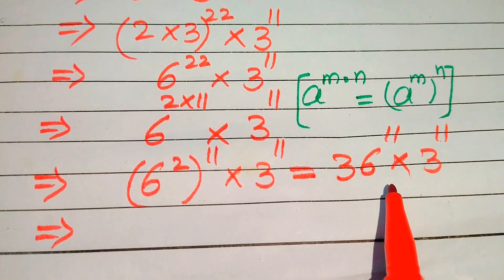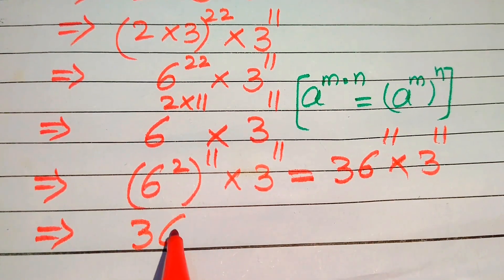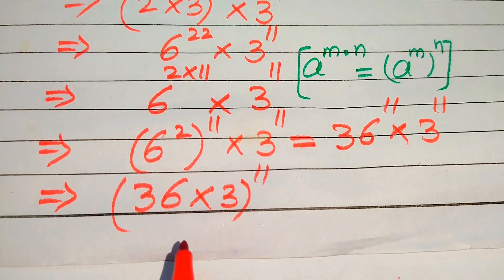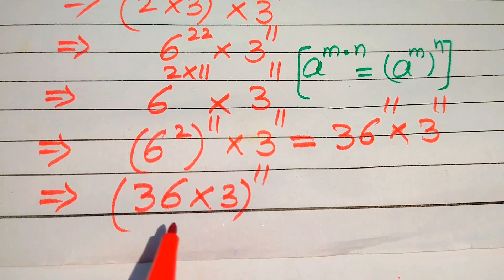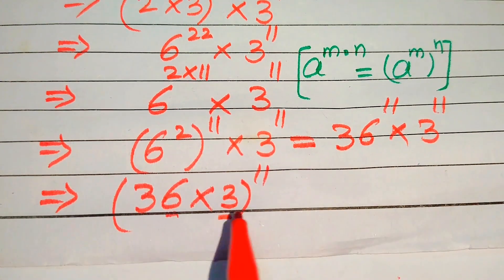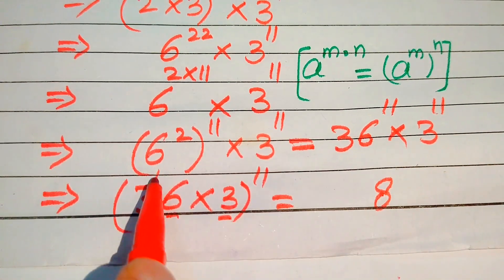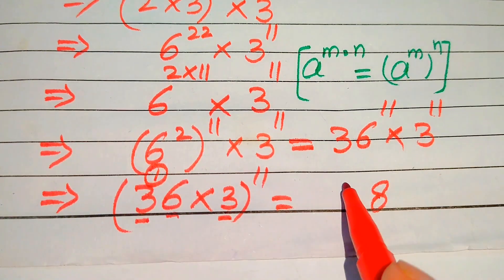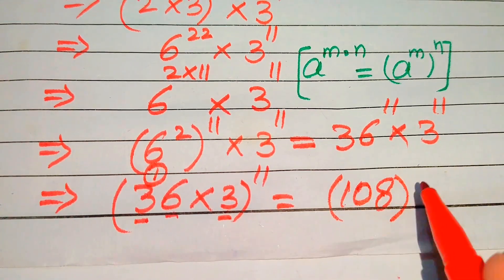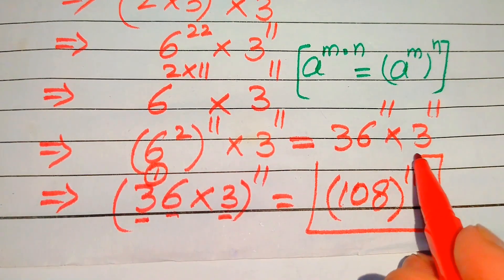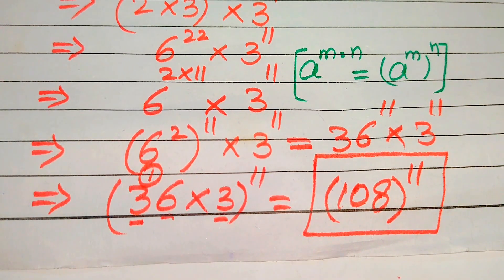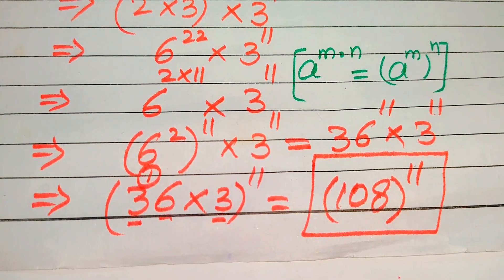Since the exponents of both terms are now the same, we combine them: 36 multiplied by 3, whole power 11. Multiplying: 6 times 3 is 18, write 8 carry 1; 3 times 3 is 9, plus 1 is 10, giving 108. So the final answer from the second method is also 108 to the power of 11. I hope you like both methods — please don't hesitate to share other methods in the comments. Thank you for watching, and please subscribe for more videos.